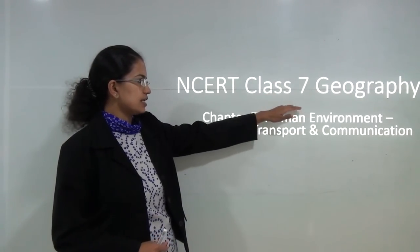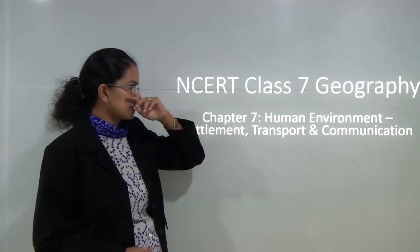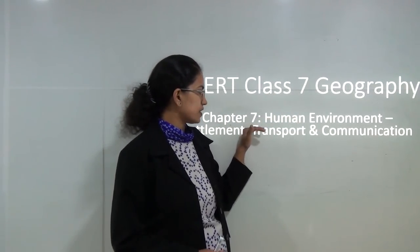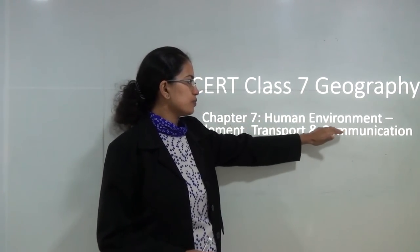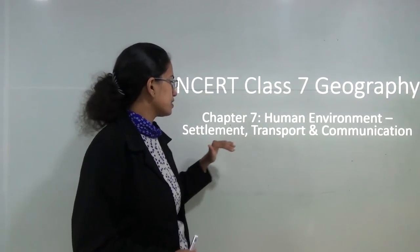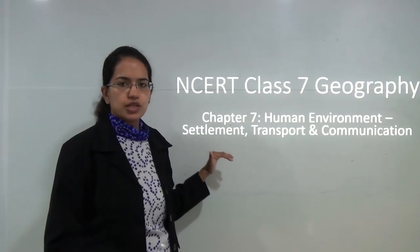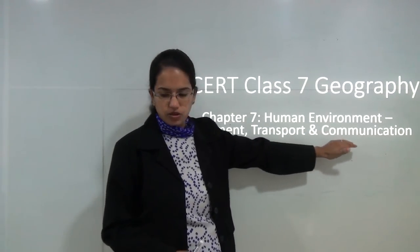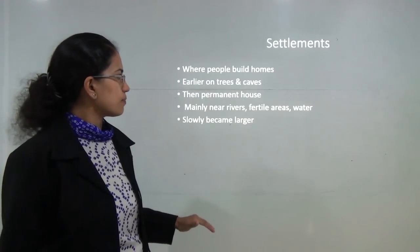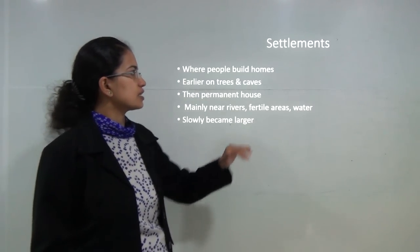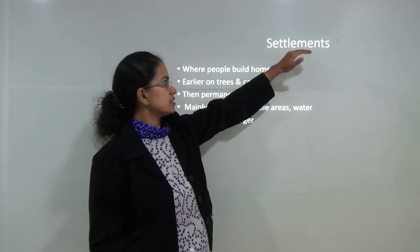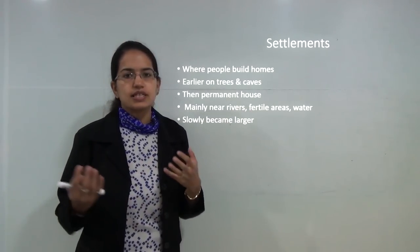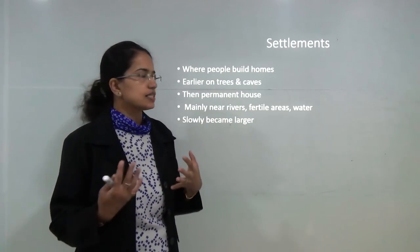We will start with the next class, that is NCRT Class 7 Geography Chapter 7 Human Environment. We will focus today on settlement, transport and communication. The first topic we will start with is settlements.